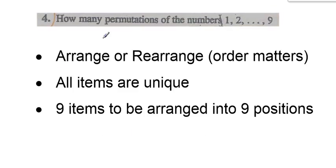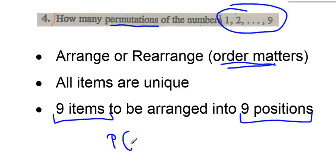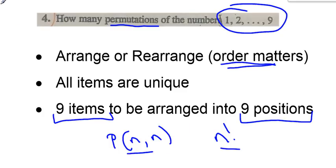So here are the key things to keep in mind as we do this question. Because it's a permutation question, we know that this is a question about arranging or rearranging, so obviously order matters. The original set of objects that I'm arranging or rearranging — all of the items are unique in that set. We are doing nine unique items arranged into nine positions, so I'm probably going to end up using factorial notation.